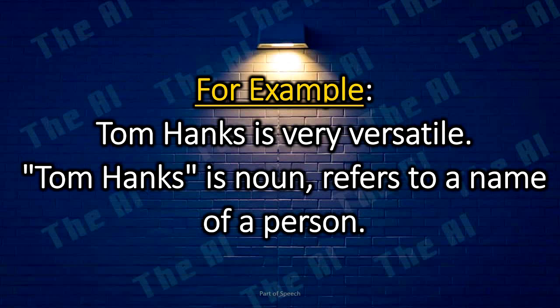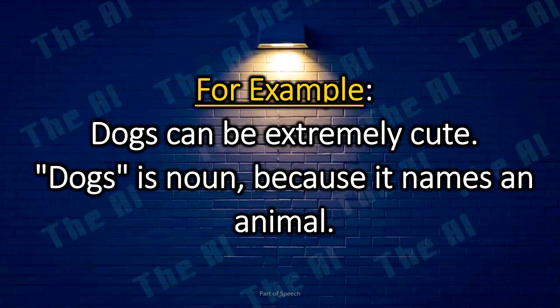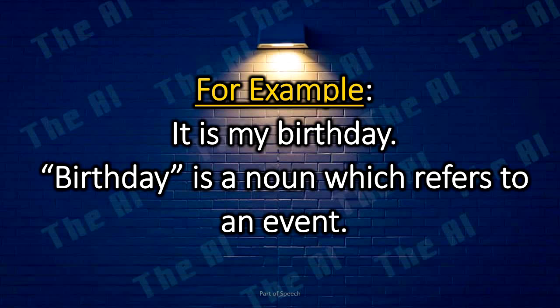Examples. Tom Hanks is very versatile. Tom Hanks is a noun, referring to the name of a person. Dogs can be extremely cute. Dogs is a noun because it names an animal. It is my birthday. The word birthday is a noun which refers to an event.